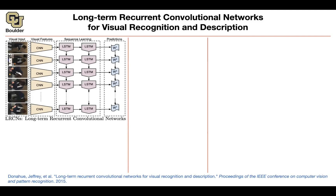Let's start with this paper: Long-Term Recurrent Convolutional Networks for Visual Recognition and Description. It's going to be called LRCN, which stands for Long-Term Recurrent Convolutional Networks.